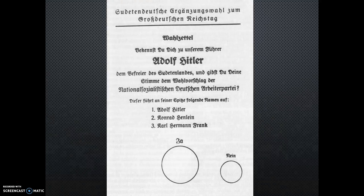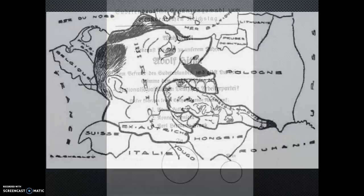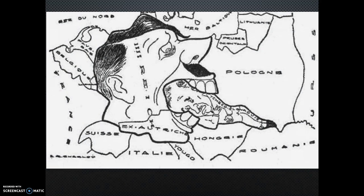There was also a plebiscite to decide whether citizens supported the move by Hitler — again, the yes vote was very large. In March of 1939, Czech President Hácha met with Hitler and was told that if he didn't agree to unite with Germany, they would invade. He capitulated and German troops occupied the rest of the country. On March 18th, Prime Minister Chamberlain told the British cabinet that, quote, no reliance could be placed on any assurances given by the Nazi leaders. Clearly, Hitler had demonstrated that appeasement was not working.